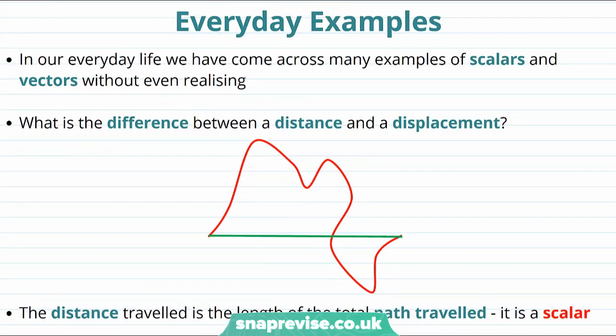Now let's look at some everyday examples of scalars and vectors. We have actually come across many examples of scalars and vectors without even realizing. So what is the difference, for example, between a distance and a displacement? Let's flesh out what's happening here. Let's imagine that I wanted to get from point one to point two. And let's imagine that I got from point one to point two by taking this red wiggly path.